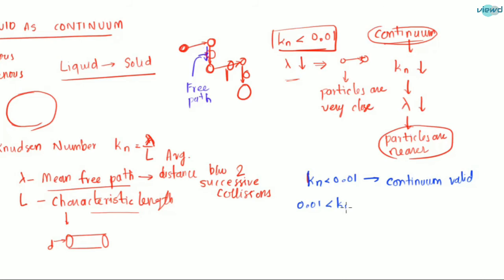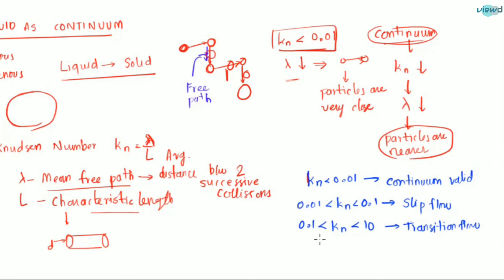If the Knudsen number is greater than 0.01 and less than 0.1, it is called slip flow. If the Knudsen number is greater than 0.01 and less than 10, it is called transition flow. If the Knudsen number is greater than 10, it is free molecular flow.